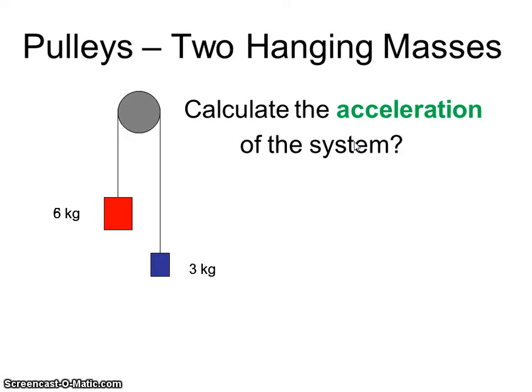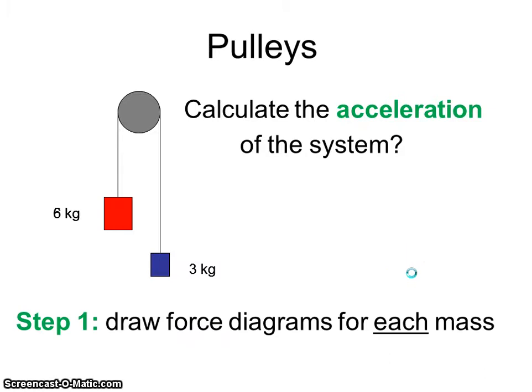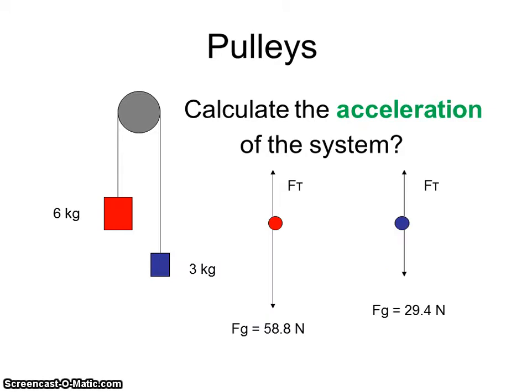We're going to work them similarly, but there's less forces to deal with, so these problems are actually a little bit easier. The first step, draw the force diagram on each of these guys. For the red guy, you've got the force of gravity going down, 58.8. I got that by taking 6 times 9.8. I got a tension force going up. Don't know what that value is, we're going to figure out what that value is. But those are the only two forces acting on it.